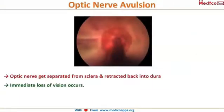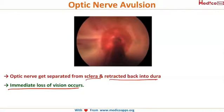Optic nerve avulsion is the most devastating condition, causing immediate blindness. The optic nerve completely separates from the sclera and retracts back into the dura — like a thread separating from a ball. The patient becomes absolutely blind after this. These are all the findings in mechanical trauma to the eyeball.